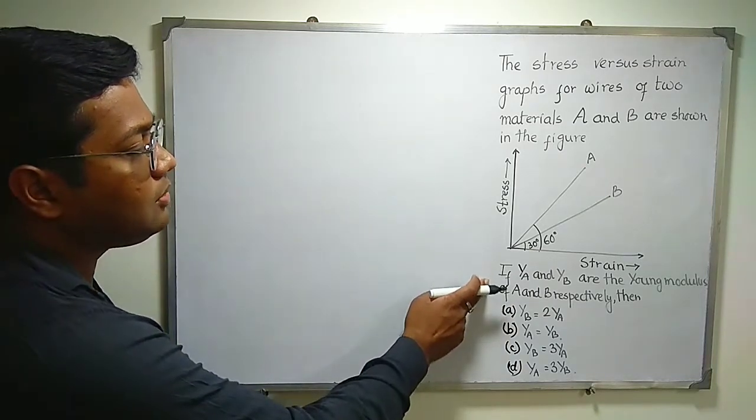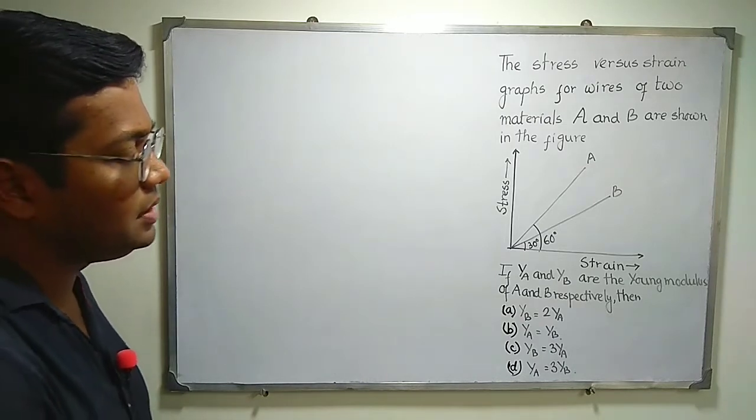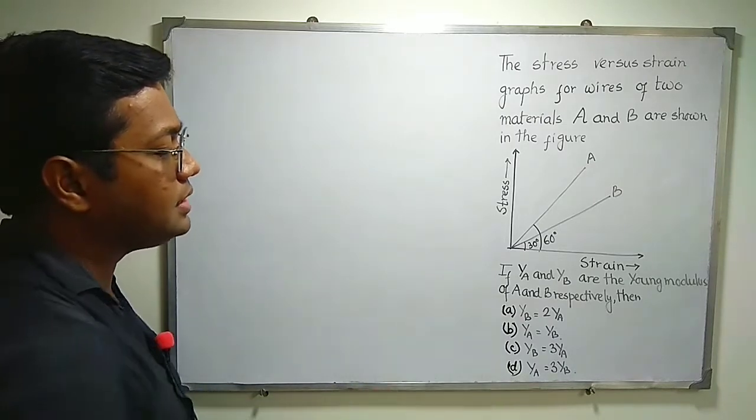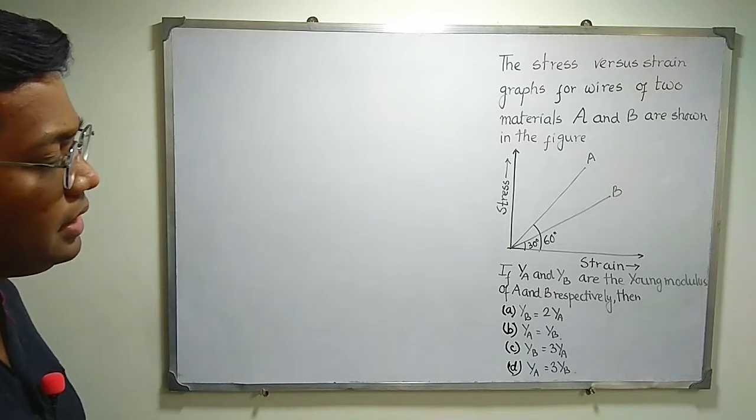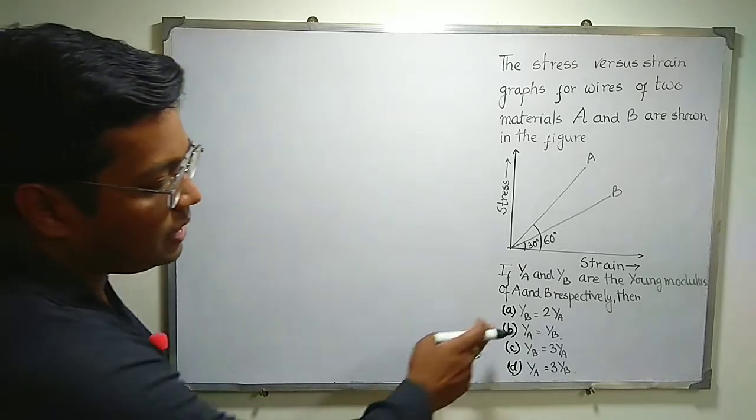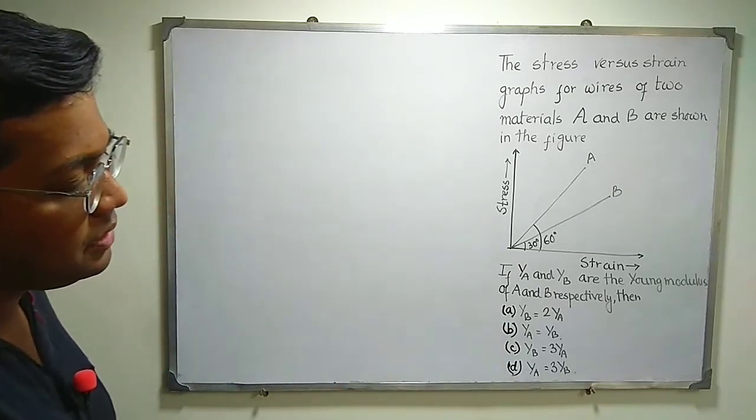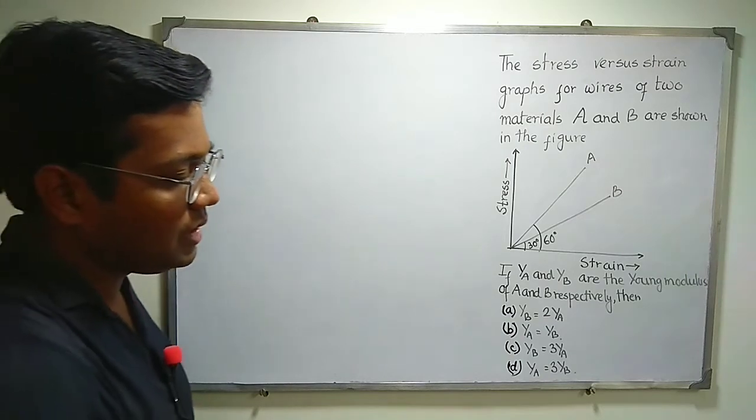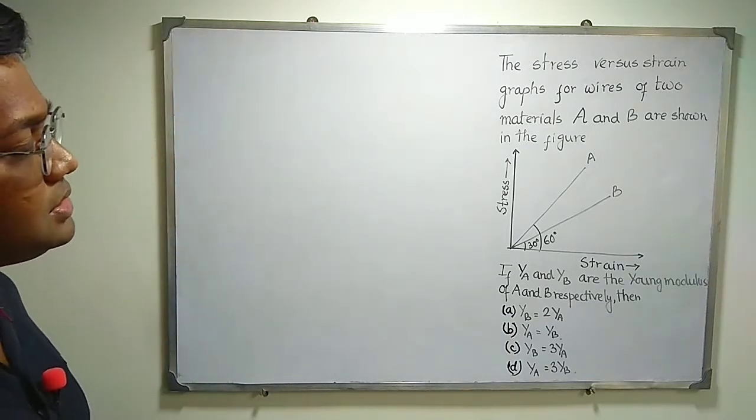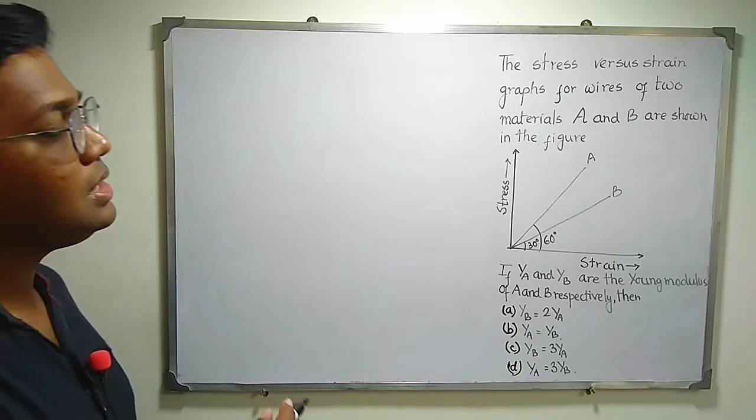If YA and YB are the Young modulus of A and B respectively, then the options are: (A) YB equal to 2YA, (B) YA equal to YB, (C) YB equal to 3YA, and (D) YA equal to 3YB.